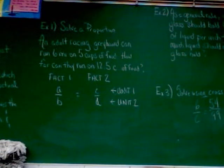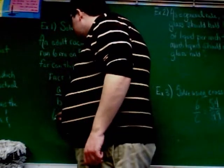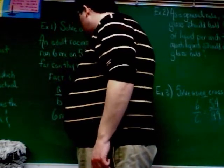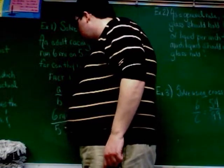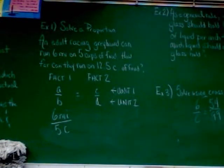So first fact, six miles on five cups of food. I'm going to put on the left side six miles over five cups. Now, I could have very well chosen to write five cups over six miles. It doesn't matter. That's all your own choice. Now, other fact, we want to know how far can they run on 12 and a half cups of food.